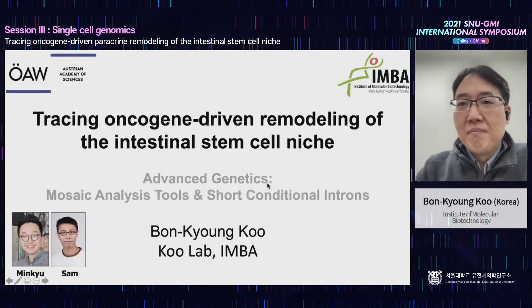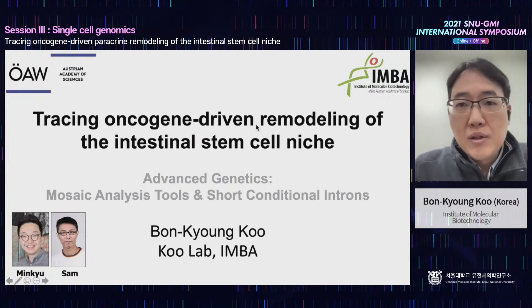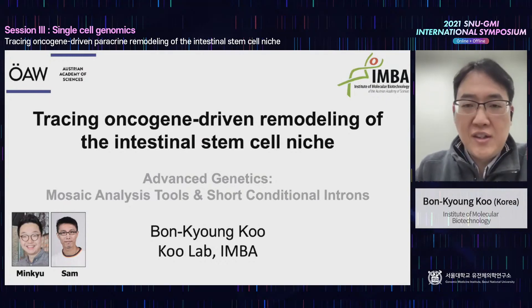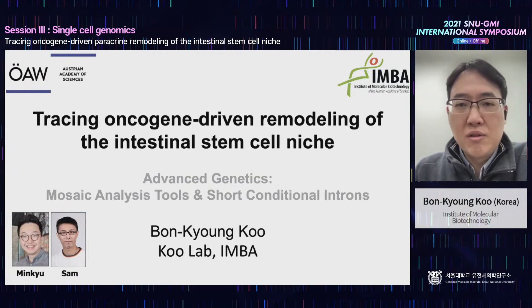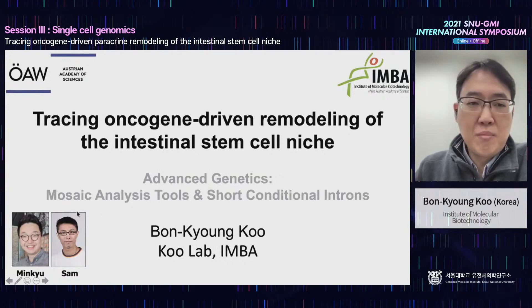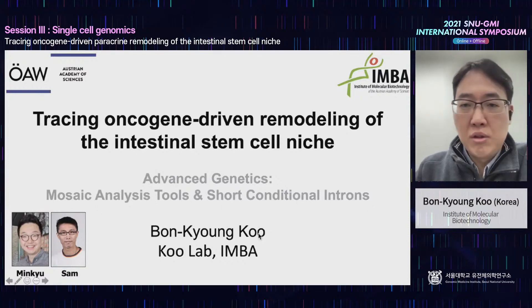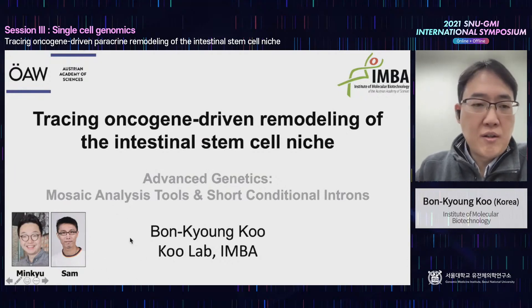Today I'm going to talk about how an oncogene can remodel the stem cell niche in order to affect wild-type stem cells nearby the oncogene-expressing mutant cells. You can also regard this presentation as examples of advanced genetics tools such as mosaic analysis and short conditional introns. This work has been led by two brilliant scientists, Mingyu Young and Sam Mu, and Singmin Han also helped a lot with the single-cell RNA-seq part.